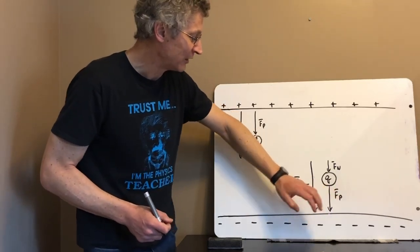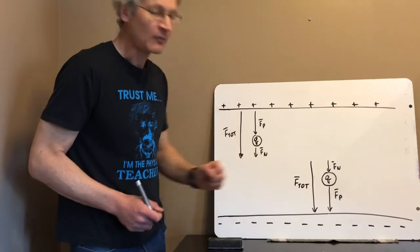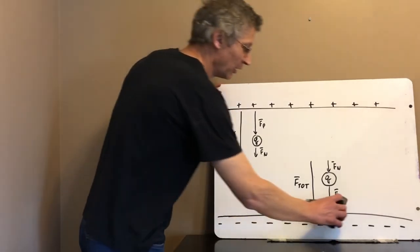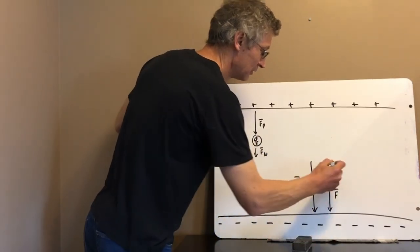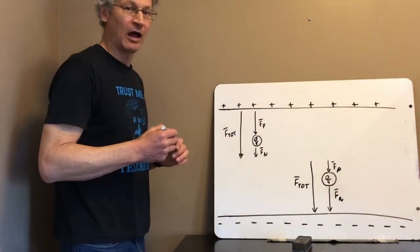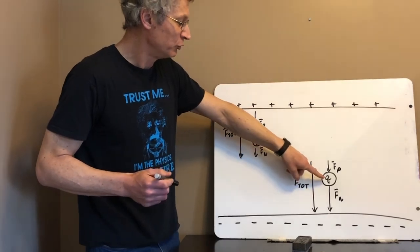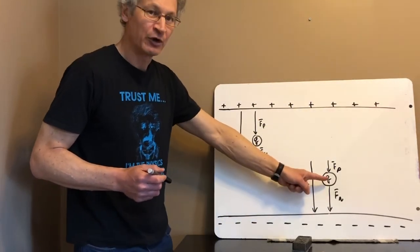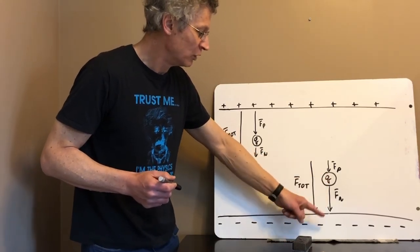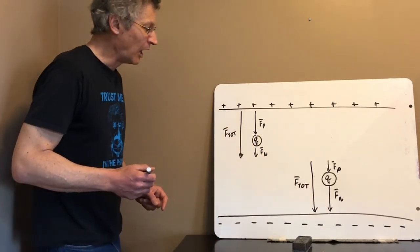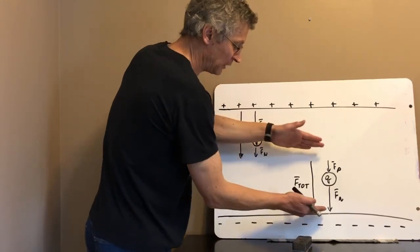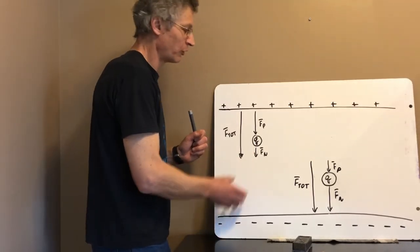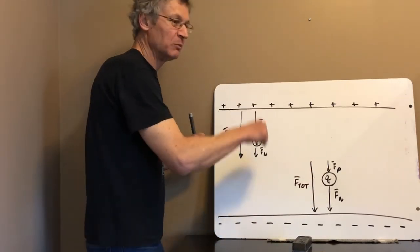Now for the charge closer to the negative plate: the positive charges are far away, so they exert a small downward force F_p. The negative charges are very close, so they exert a large downward force F_n. When you add those two together, you get the same total force as you did for the charge near the positive plate. So it doesn't matter whether you're close to the positive or close to the negative — the electric field is always going to be the same.